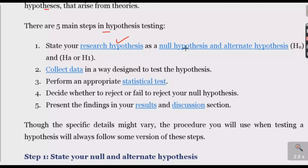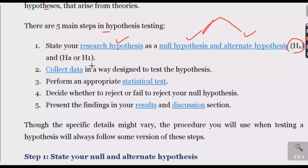We have two types of hypothesis. We have H0, the null hypothesis, and the alternative hypothesis, which we call H1.